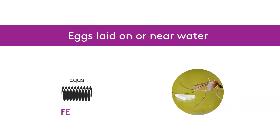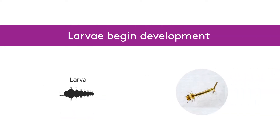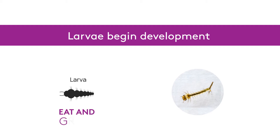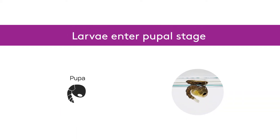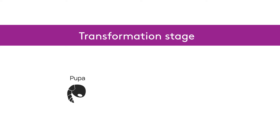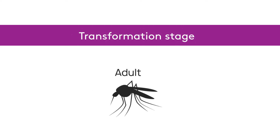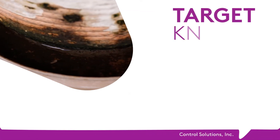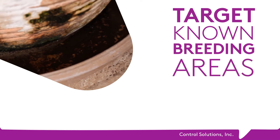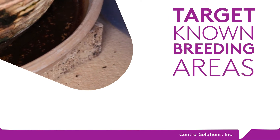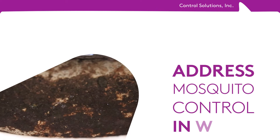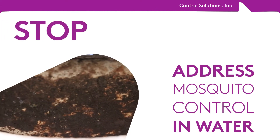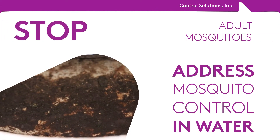Eggs are laid in water by female mosquitoes. Once the eggs hatch, larvae begin to develop. Their only job is to eat and grow. Once the larvae get large enough, they enter the pupal stage — the transformation stage between larvae and adult mosquitoes. Due to the large amount of time that mosquitoes spend in water, it makes sense to target known breeding areas to stop development of adults. By addressing mosquito control in the water, we can stop development of adult mosquitoes, lowering the overall population.